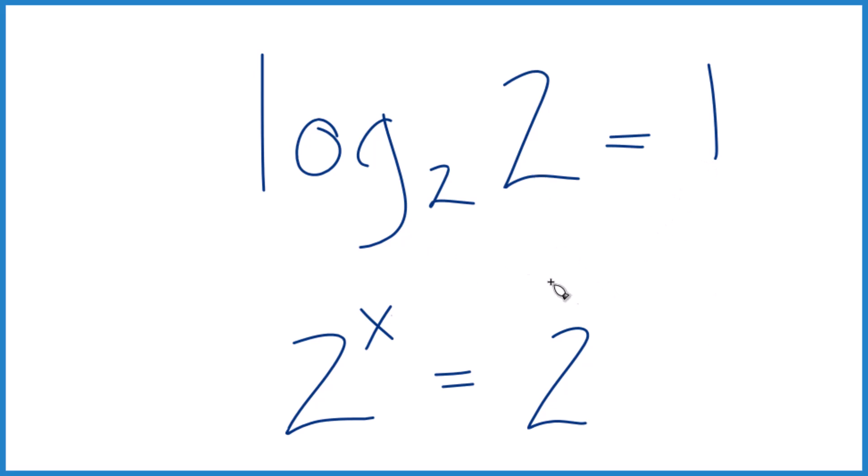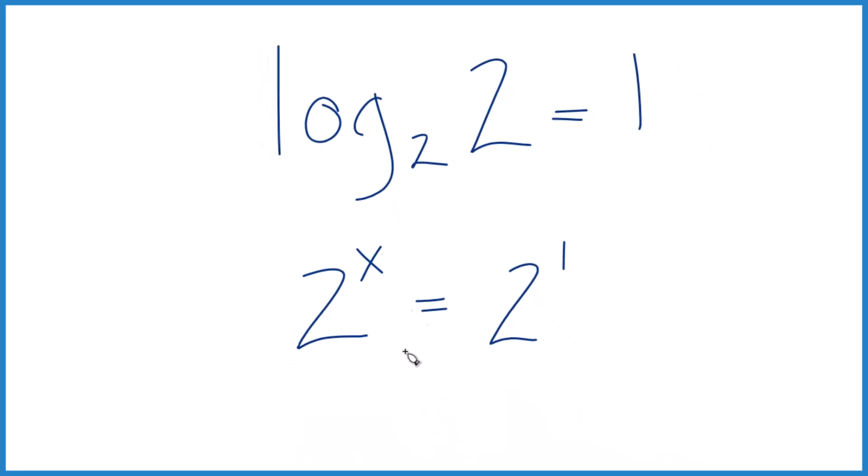You might think of it this way as well. 2, really, you could consider this 2 to the 1. We don't write the 1, but it's just assumed. So 2 to the x equals 2 to the first, and then the base, that's the same. So we can ignore that. We can just call it x equals 1, which is what we found before.